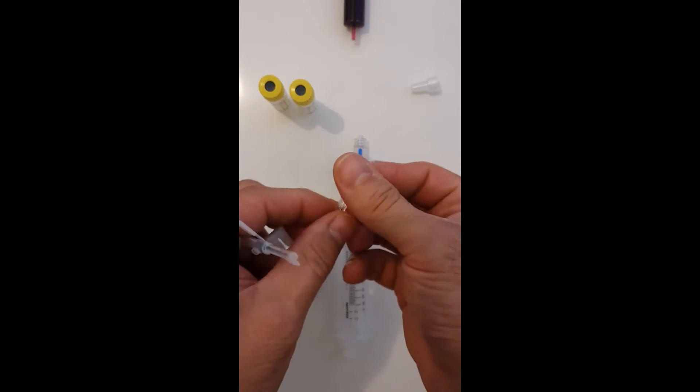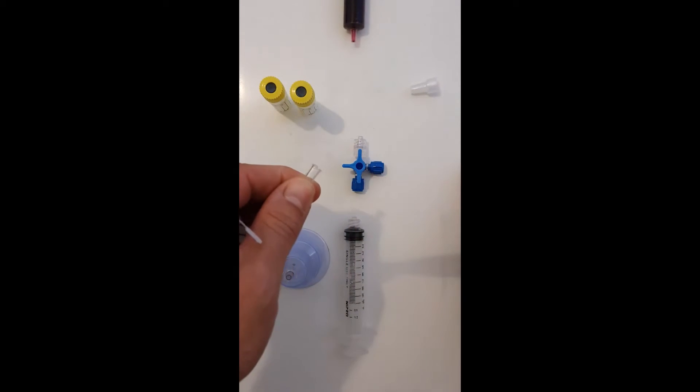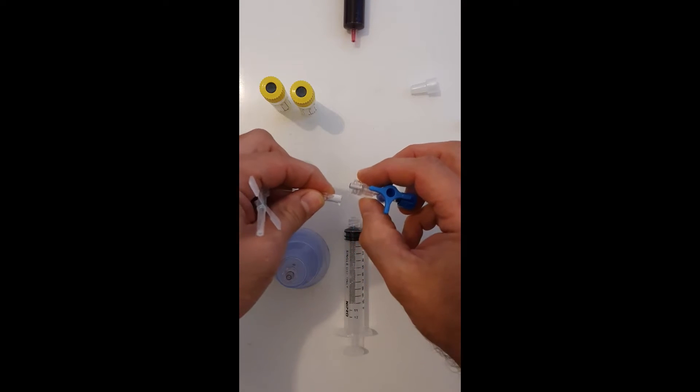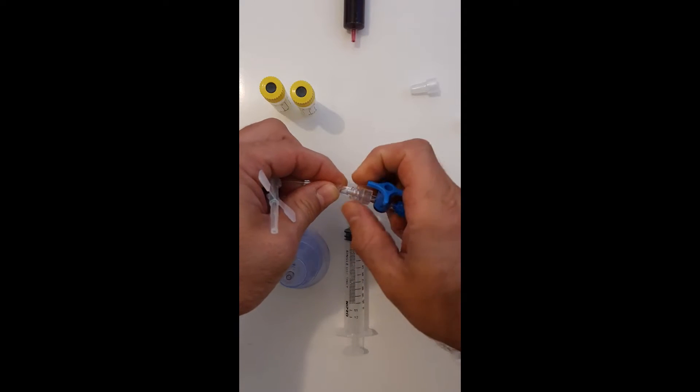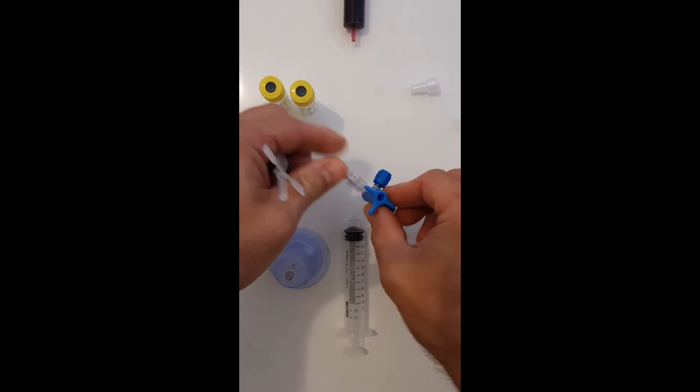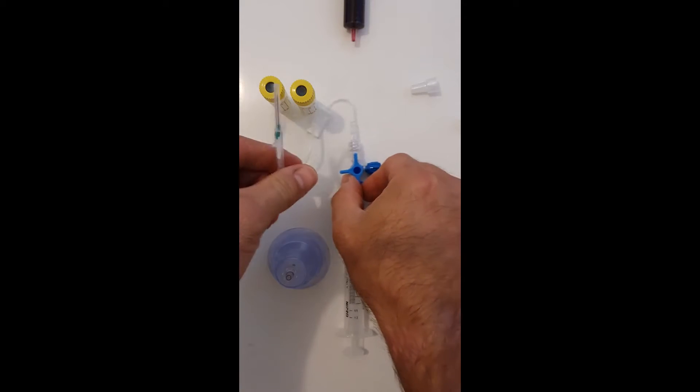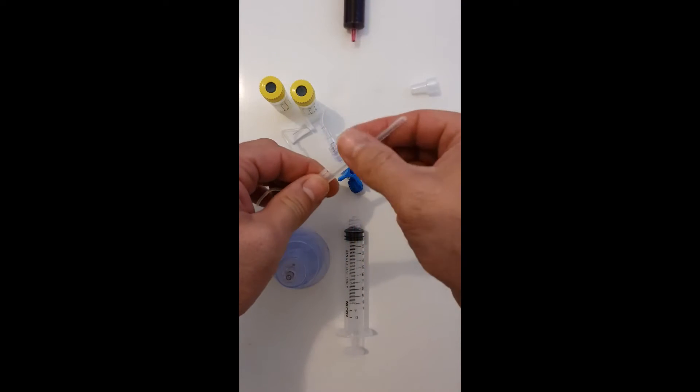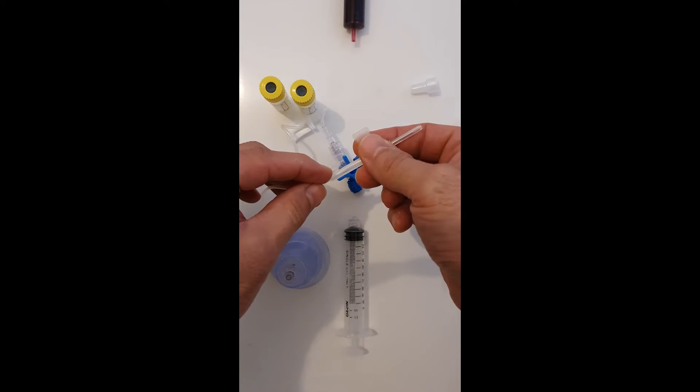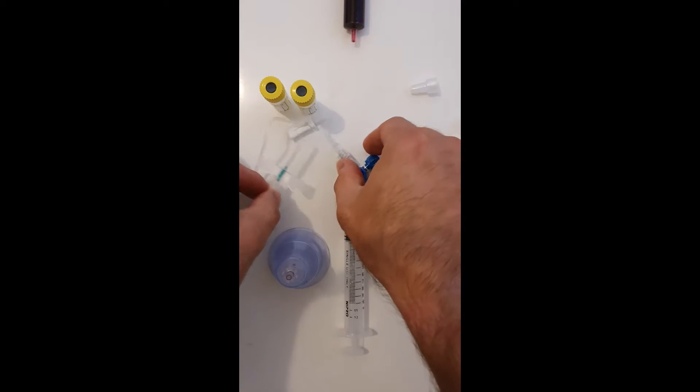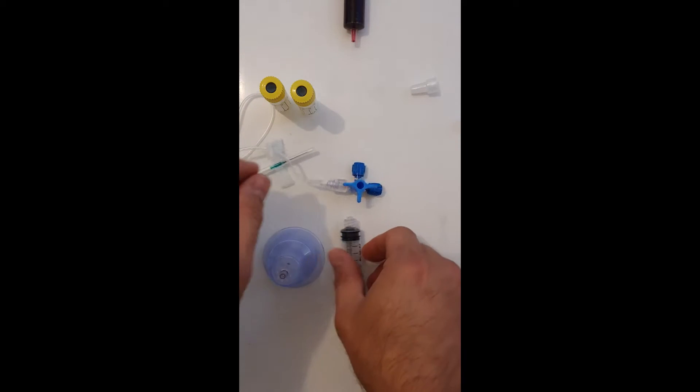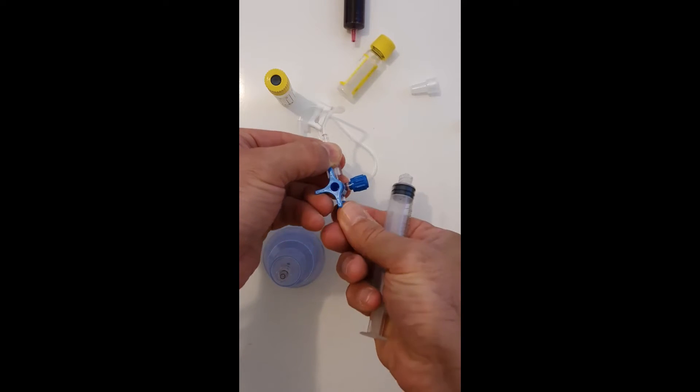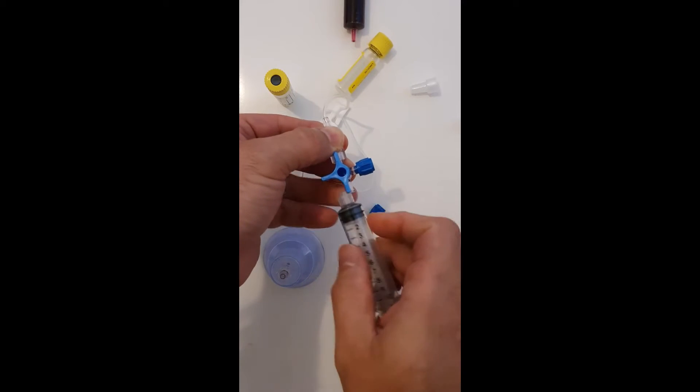What we're going to do is remove the end cap and attach it straight to the stopcock. As you can see here, there is a lock and also a tube lock here. The next thing we do is we attach the syringe.